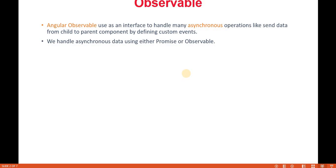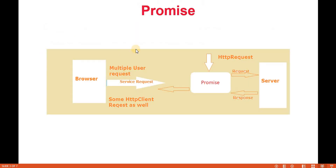In Angular, to perform asynchronous programming we have two ways: either we can use promises or observables. Now, looking at the difference between them — from the browser we are sending multiple requests. These requests can be anything, like normal requests or HTTP client requests.